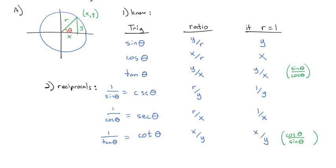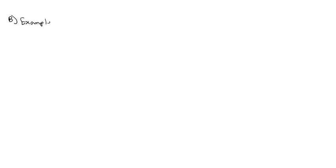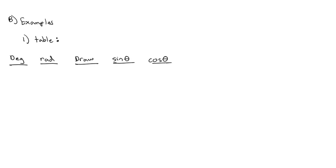We have all these reciprocal functions and other functions to work with. For practice, let's make a table of values. We'll set up a big table with degrees, which we can convert to radians, draw a picture for each angle, and then find the sine, cosine, tangent, cosecant, secant, and cotangent. We should be able to find all six trig functions for any angle.